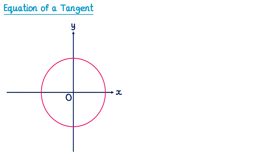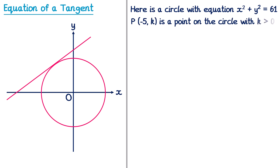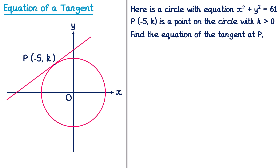Now let's have a look at a third example. This time the question is worded slightly differently: here is the circle with equation X squared plus Y squared equals 61. P, with coordinates (negative 5, K), is a point on the circle with K greater than 0, and we need to find the equation of the tangent at P. We can start by drawing a line from O to P and trying to find its gradient using a gradient triangle. The change in Y is K, and the change in X goes from negative 5 up to 0, so that's a change of 5. But we need to find the value of K, so we'll use the equation of the circle. Since P is on the circle, we replace X with negative 5 and Y with K.